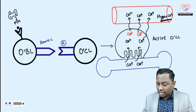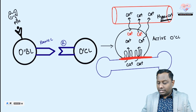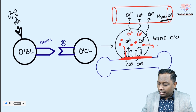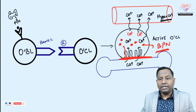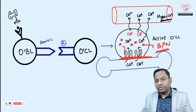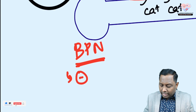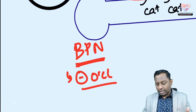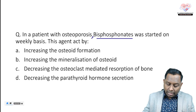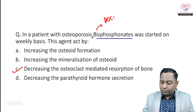Bisphosphonate is the drug of choice for osteoporosis. It gets deposited in the bone, and when the activated osteoclast takes up calcium, it also takes up the bisphosphonate — mistaking it for food. But once inside, the osteoclast realizes it is a poison. Bisphosphonate promotes osteoclastic apoptosis, thereby inhibiting the osteoclast.